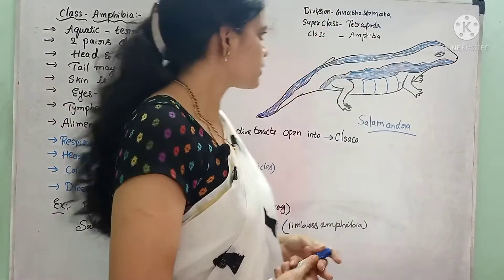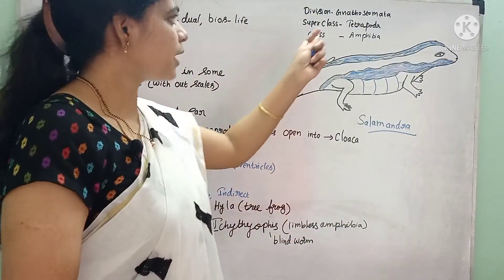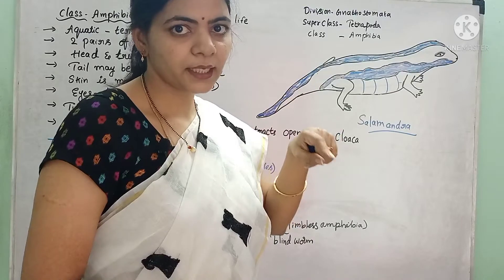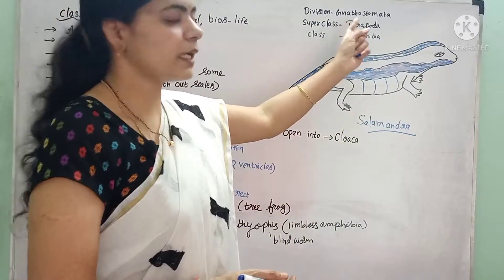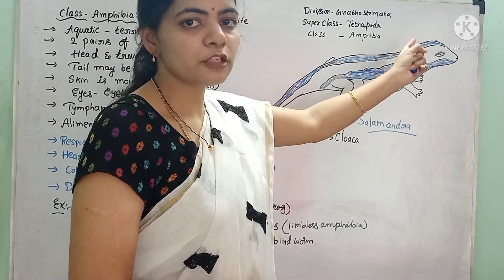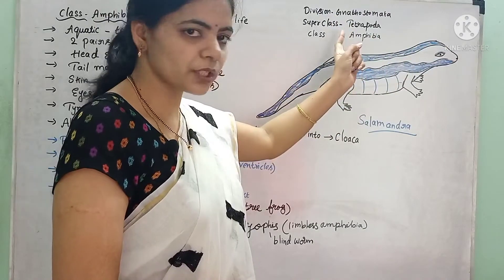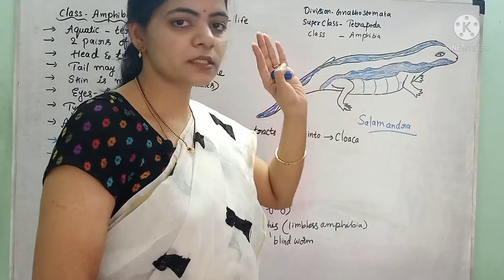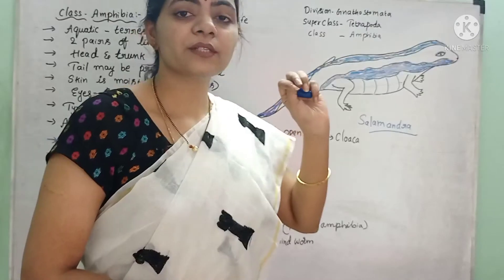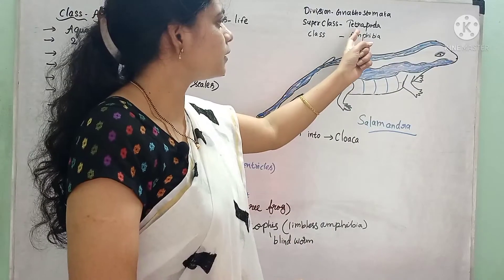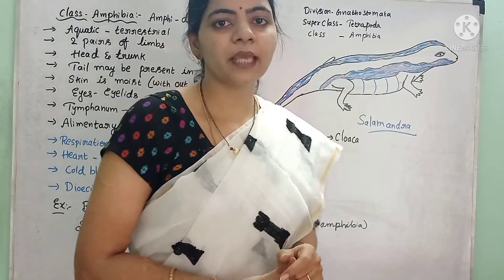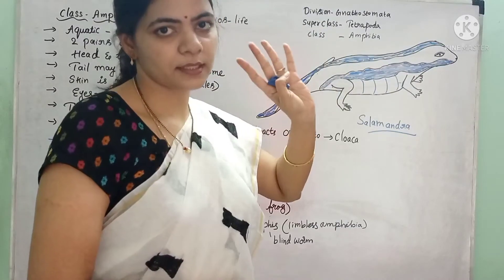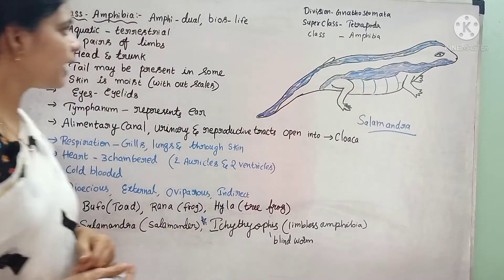Where did these amphibians come from? We see the classification. Under the subphylum Vertebrata, there are two divisions. One division is Agnathostomata, which we have already completed where the jawless animals are included, and the second division is Gnathostomata, where the animals which have strong jaws are included. Under this division there are two superclasses: superclass Pisces and superclass Tetrapoda. Under superclass Pisces we have studied fishes, and in Tetrapoda, animals which have paired appendages are included. Under Tetrapoda there are four classes, and the first class is Amphibia.